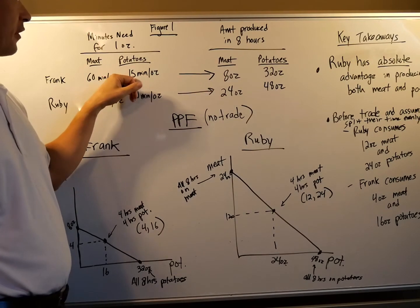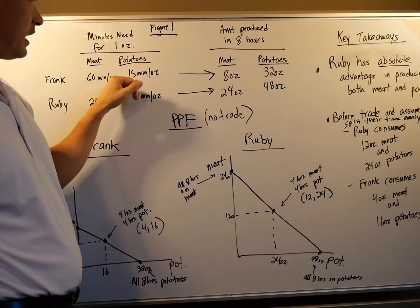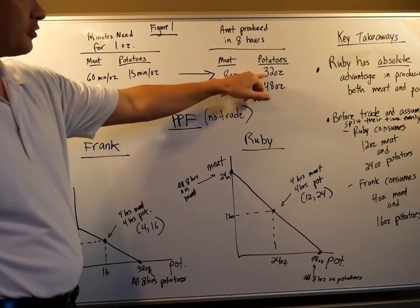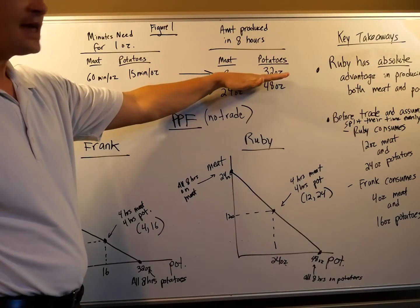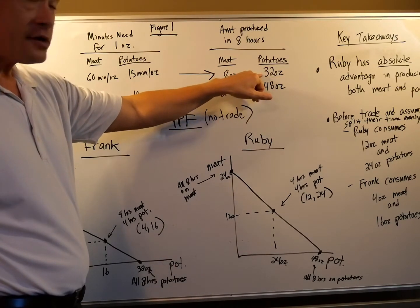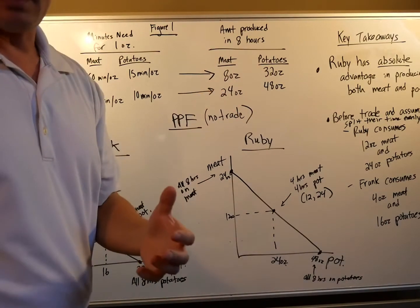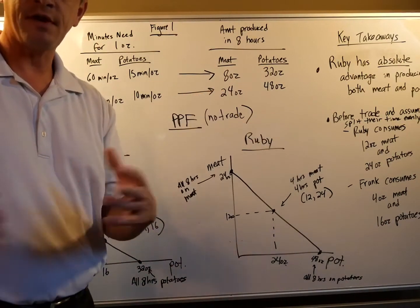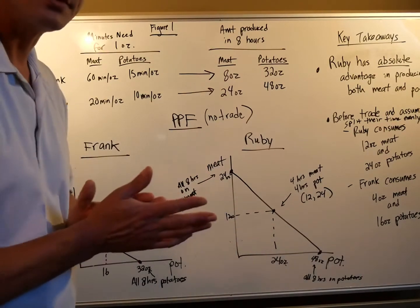For potatoes for Frank, it takes him 15 minutes. That means he can make four ounces an hour. So four ounces an hour times eight hours, you get 32 ounces. So in an eight hour day, he can make eight ounces of meat if all he does is make meat. Or he can make 32 ounces of potatoes if all he does is make potatoes. Now here's the thing, they're not trading. So they're going to make some meat and potatoes. So we're going to meet somewhere in the middle. We'll get to the PPF here in a minute. That'll help illustrate that.